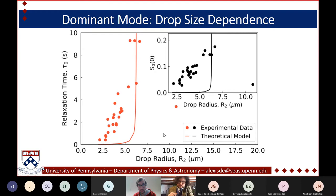We repeat this for many drops of different sizes. We find a clear radius dependence: both the relaxation time and the amplitude of the correlation function increase with drop radius. There are also theoretical prediction lines, which I'll explain now. Our question is to understand where this behavior comes from, which is where we collaborated with Tom Lubensky at Penn.